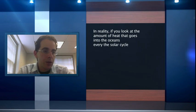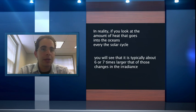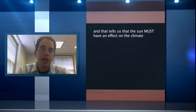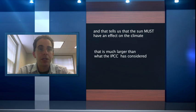In reality, if you look at the amount of heat that goes into the oceans every solar cycle, you see that it's typically about six or seven times larger than those changes in irradiance. And that tells us that the sun must have an effect on climate which is much larger than what the IPCC is considering.